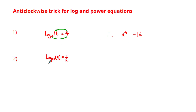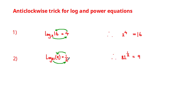Let's look at the next example: log base 81 of 9 is equal to a half. Using the anti-clockwise trick where the base is 81, the equivalent power equation is 81 raised to the half is equal to 9.